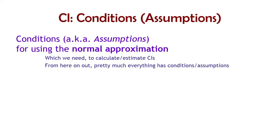We have conditions — sometimes called assumptions — for doing confidence intervals. The conditions aren't actually for doing confidence intervals; they're for using the normal approximation. We have to use the normal approximation to calculate these confidence intervals. There are other approximations you could use, other distributions, and other methods that don't use approximations. But for this class, we're going to do the most common thing: using the normal approximation to calculate confidence intervals.